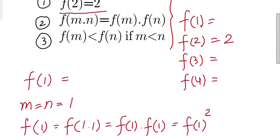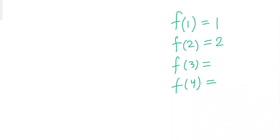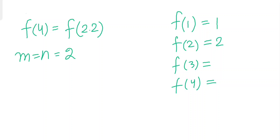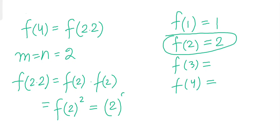So we have f(1)=1 and f(2)=2. Now let's find f(3). To find f(3), we first need to find f(4). Using the multiplicative property with m=n=2, f(2·2) = f(2)·f(2) = f(2)² = 2² = 4. So f(4)=4. Now let's use f(2) and f(4) to find f(3).